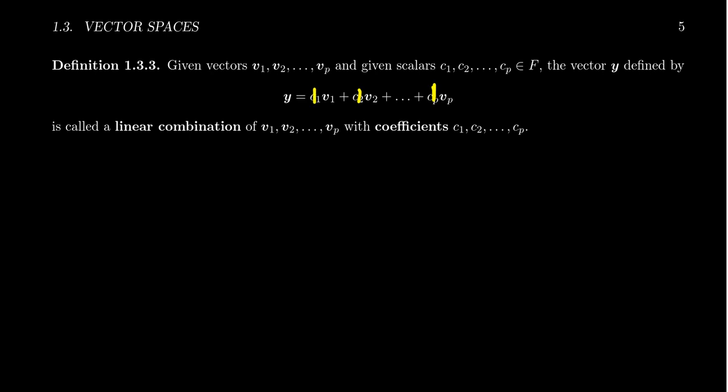In which case, any sum of vectors is, in fact, a linear combination. It could also be that p itself is the number one. That is, there's only one vector in the combination. So a scalar multiple of a vector is a linear combination.